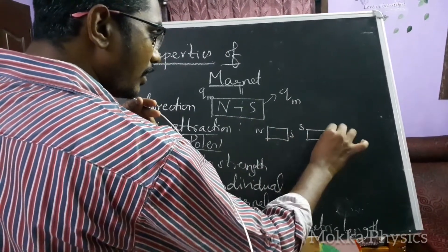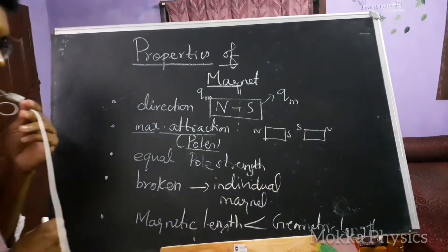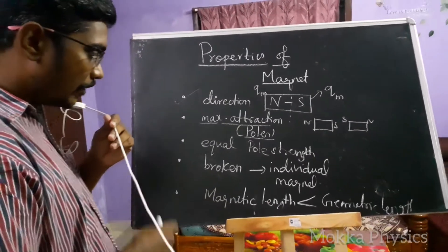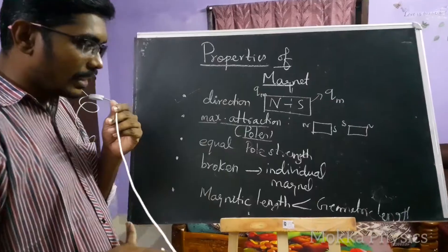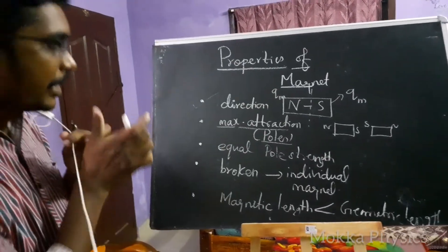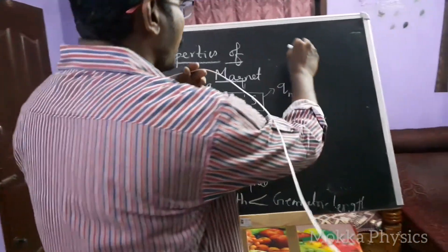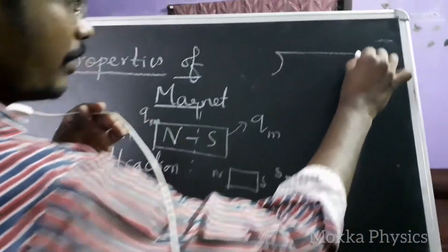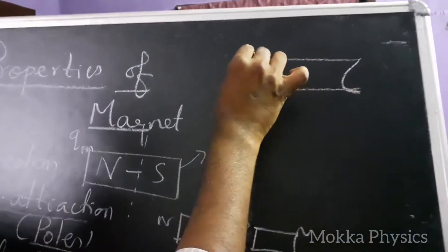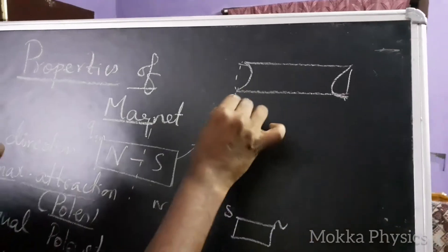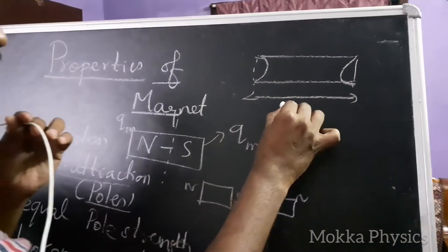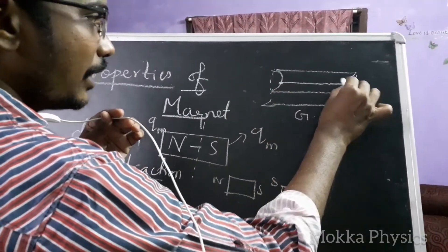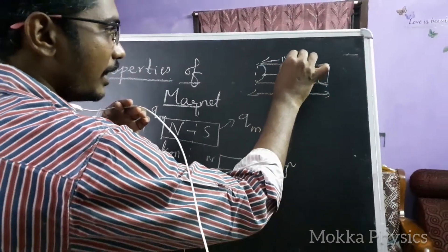If a magnet is broken, each piece behaves as a magnet because magnetic monopoles do not exist. The fifth point concerns magnetic length and geometric length. The geometric length is measured end to end of the bar magnet, while the magnetic length is measured from pole center to pole center along the curved path.